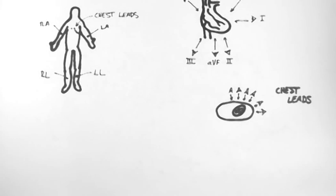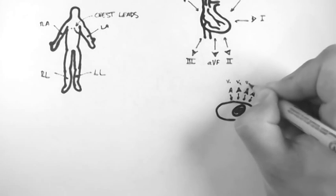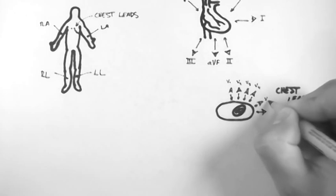These are labelled much more simply. They're called V1, V2, V3, V4, V5 and V6.